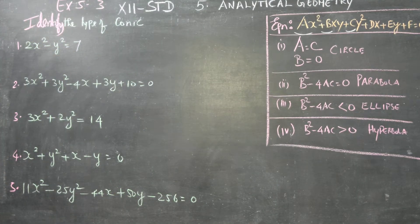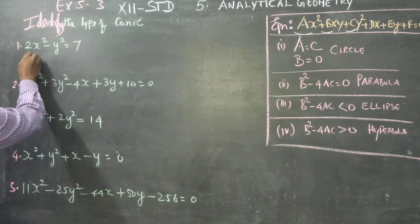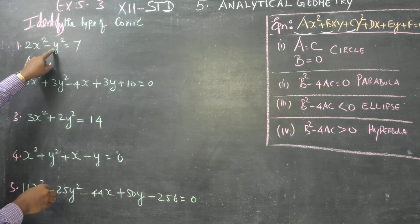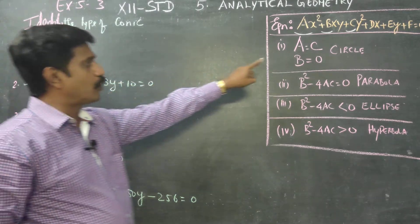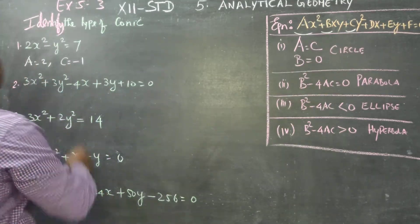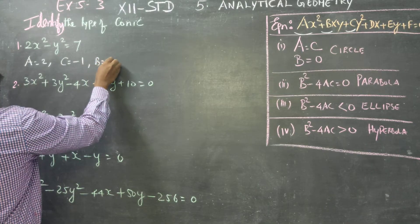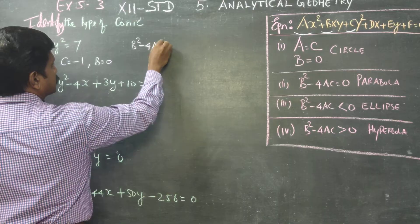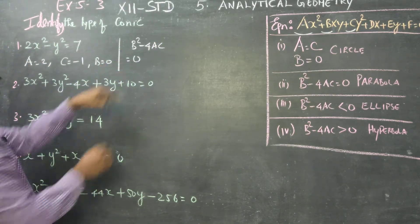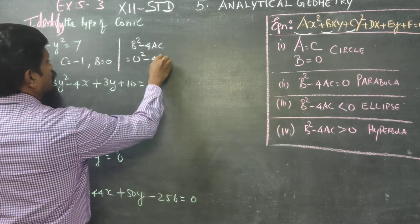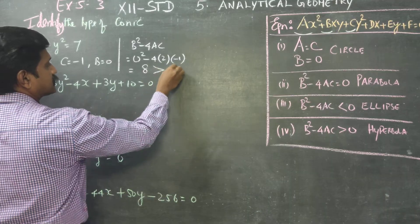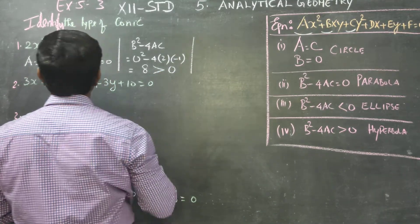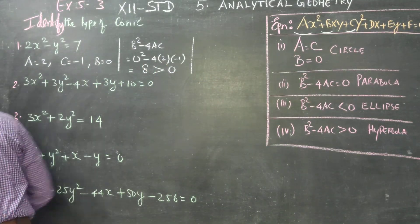Let us come to sum number 1 in exercise 5.3: 2x squared minus y squared equals 7. The coefficient of x squared, capital A, is 2. The coefficient of y squared, c, is minus 1. There is no xy term, so b equals 0. I am going to find b squared minus 4ac: 0 squared minus 4 into 2 into minus 1. Minus into minus gives plus, so the result is plus 8, which is greater than 0. Therefore, this sum is a hyperbola.